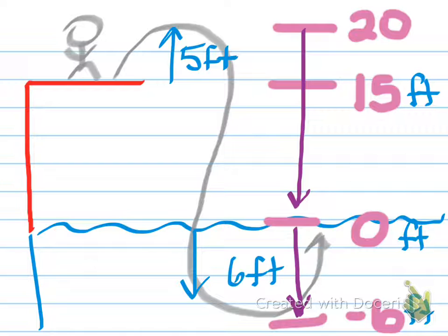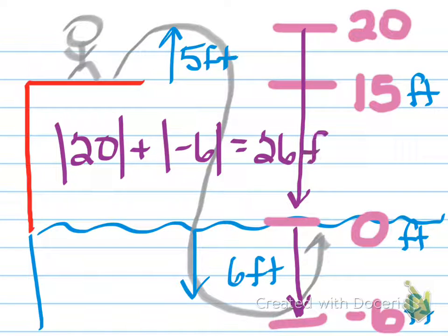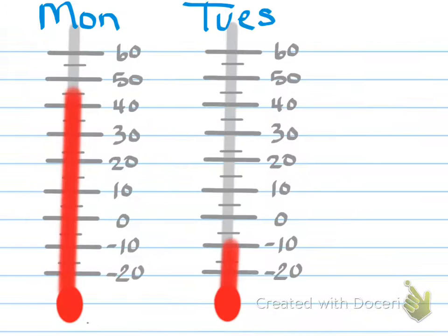The way that we work this out is by taking the absolute value of positive 20 and adding it to the absolute value of negative six. We should end up with 26 feet as the distance between the highest level and the lowest level of this dive. So that's the kind of thing that we're looking for.